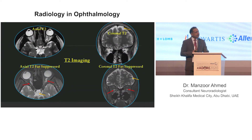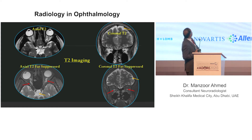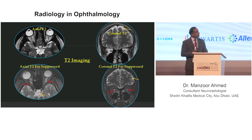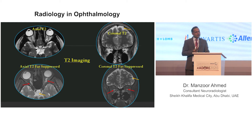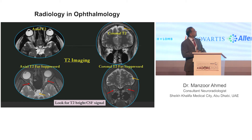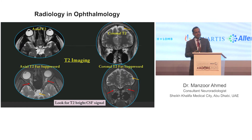Moving to MR imaging: the upper axial image is without fat suppression and the lower one is with fat suppression. The orbit is full of fat, and we have to suppress it to unmask pathologies. There is prominent CSF space in the optic nerve sheath, which is a specific pathology. On coronal images, upper is without fat suppression and lower is with. This is T2 imaging — the key is to look for T2-bright CSF signal over the brain, or CSF signal in the optic nerve sheath complex surrounding the optic nerve.